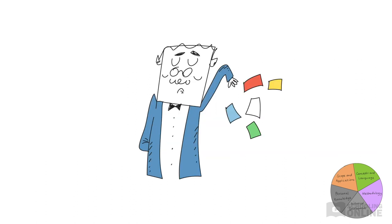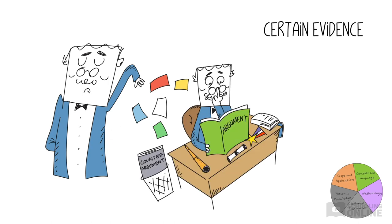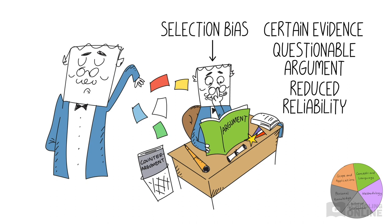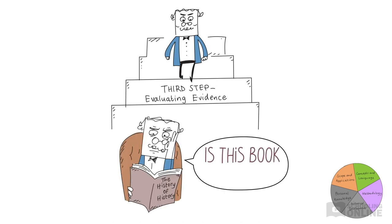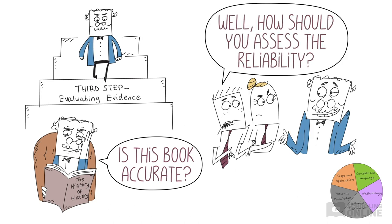But does that always happen? What happens when a historian only considers certain evidence, perhaps to strengthen a questionable argument? This is known as selection bias, and it can reduce the reliability of the knowledge that is produced. What's the next step? Historians need to evaluate their evidence — are their sources accurate? Are they reliable? How should historians assess the reliability of their sources?